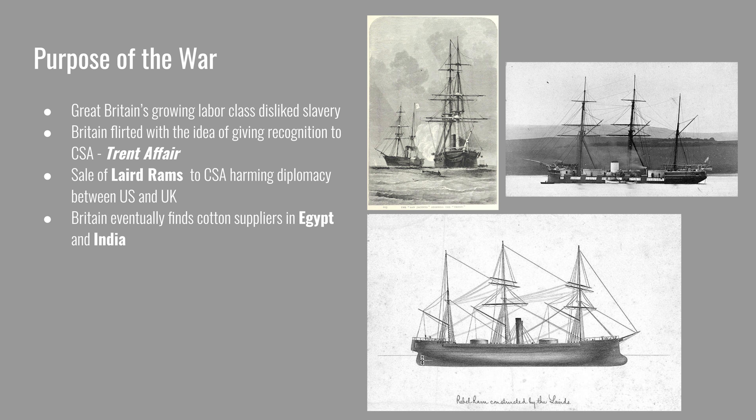If these Laird rams had been delivered to the Confederacy, they could have compromised the Union blockade around southern ports. Without the blockade, the Confederacy would have been able to export its cotton and exchange it for cash or weapons from other trading partners. The United States brought the matter up with Britain and forced the British government to confiscate the ships from the private firm, and they ended up becoming part of the British Royal Navy. Britain eventually found cotton suppliers in Egypt and India, and therefore lost its incentive to recognize the Confederacy or get involved in the American war.